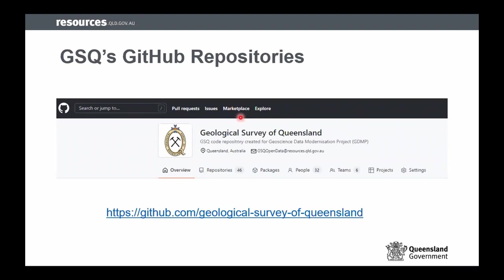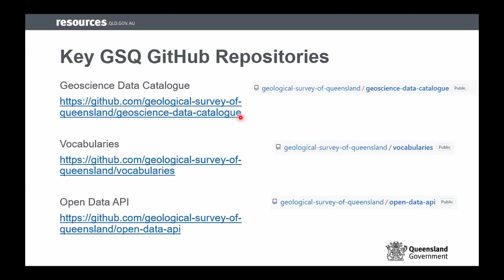GSQ has GitHub repositories. This documents not only the geoscience data modernization project we've just gone through — I'm not going to bore you with system architecture or database formats, but if you're curious please go have a look, it's all up there. I'll point out a couple of things that I think will be useful for you. We have one on our geoscience data catalog — that's our open data portal — explaining the information on there and how to use it. We've got one on our vocabs, which David will talk about. And the open data API repository is what I'll be referring to a fair bit. These are all publicly available and open to everybody, and you're welcome to collaborate with us on them.